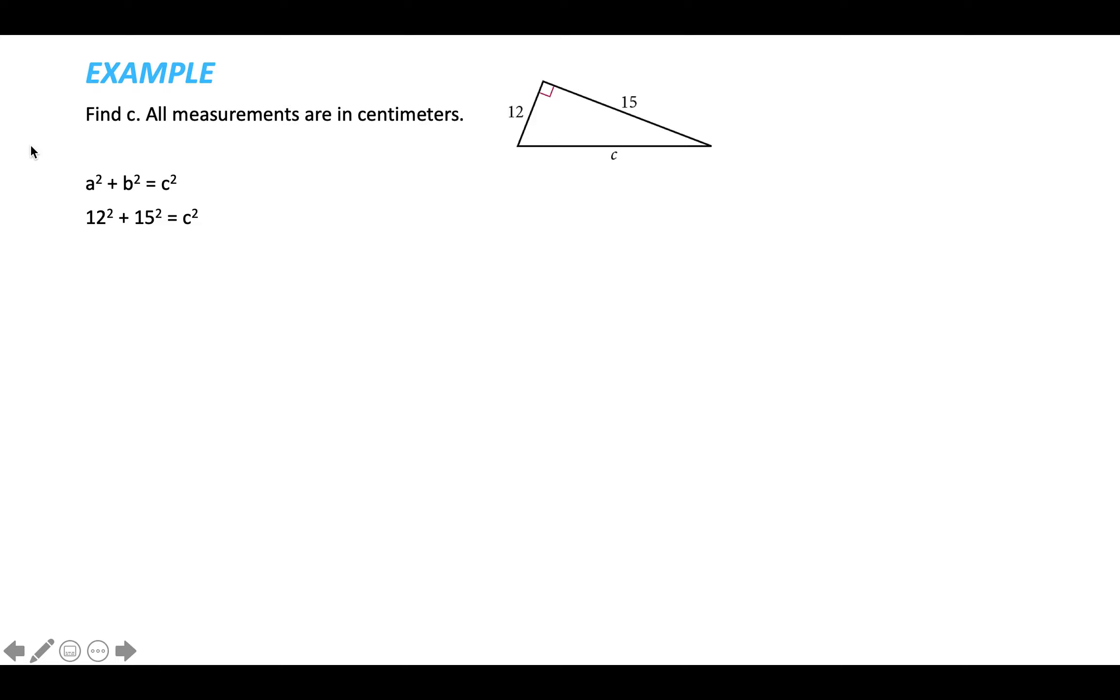Squaring means times itself, so in this next step we do 12 times 12 to get 144. We do 15 times 15 to get 225. When you add those together, you get 369, so we know that our C squared, like C times C, is equal to 369. If you want to find just C and you know C squared, you have to square root both sides. So if you square root C squared, you get C, and then the square root of 369 is about 19.2. In other words, about 19.2 times 19.2 gets you 369. So that's our length for C, and that's in centimeters because they said all measurements are in centimeters.